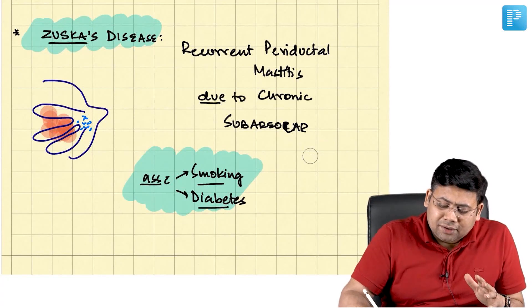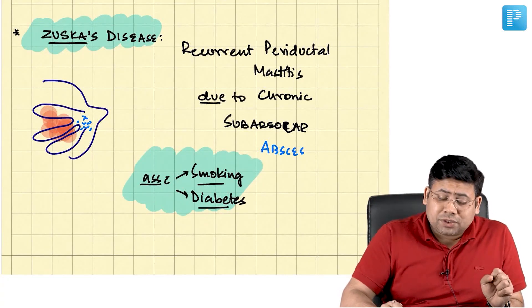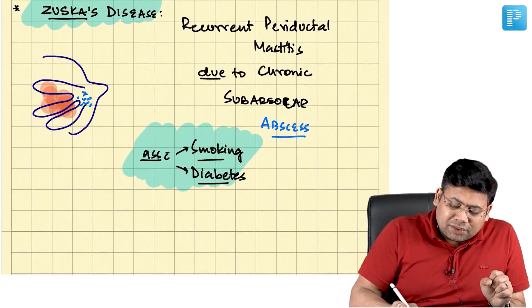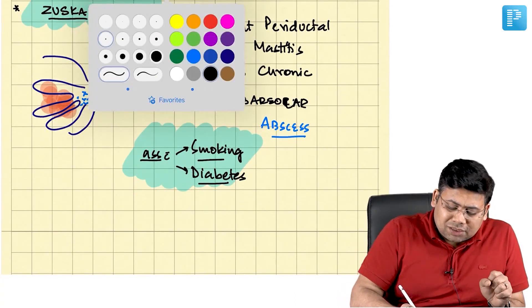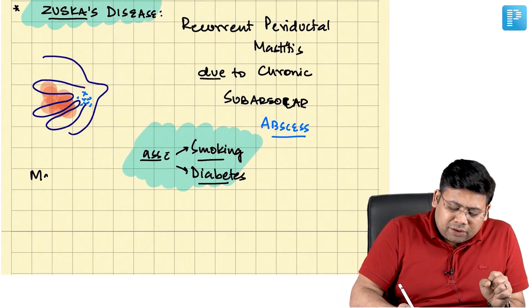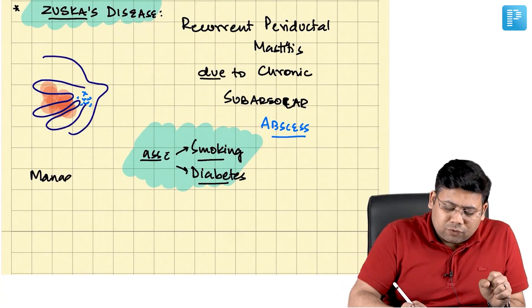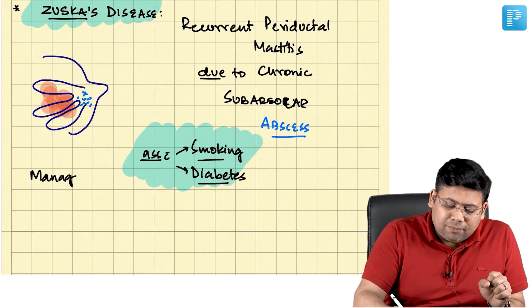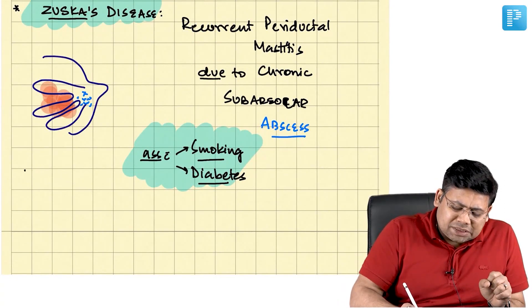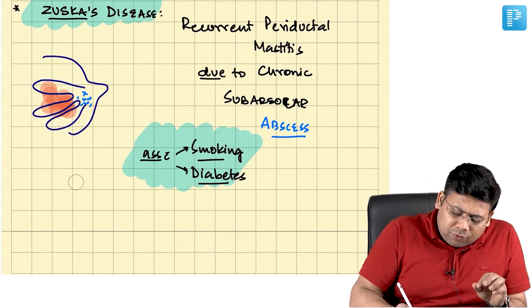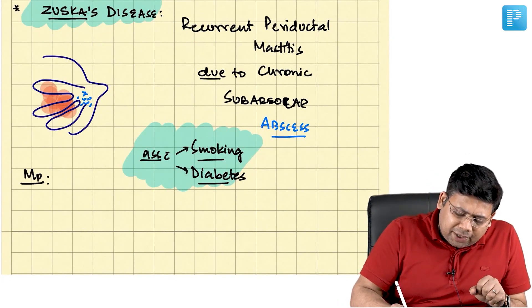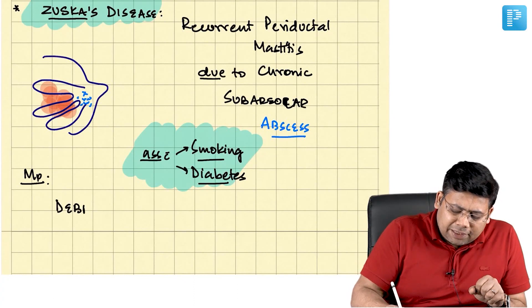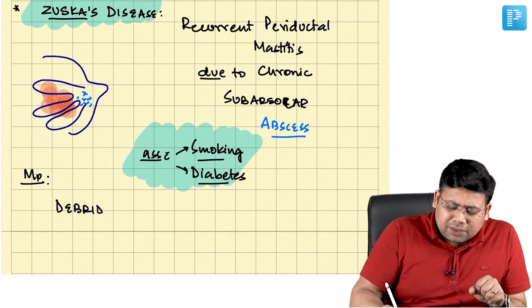So what is the classical management? The management is simple: you have to go for debridement, plus antibiotics.